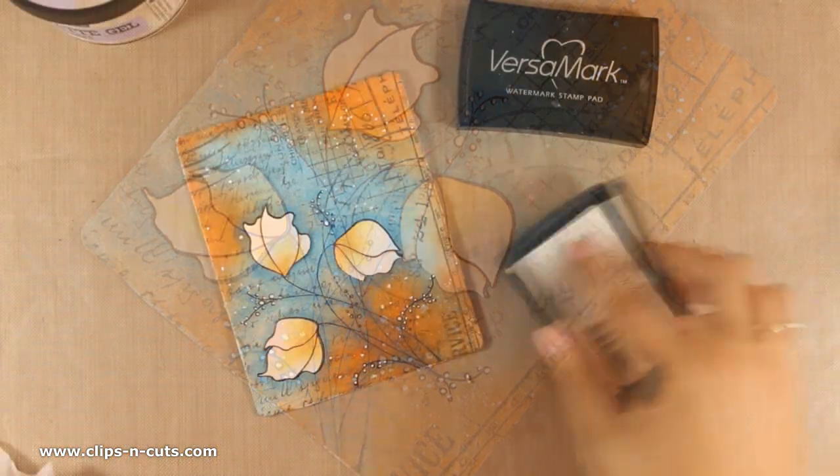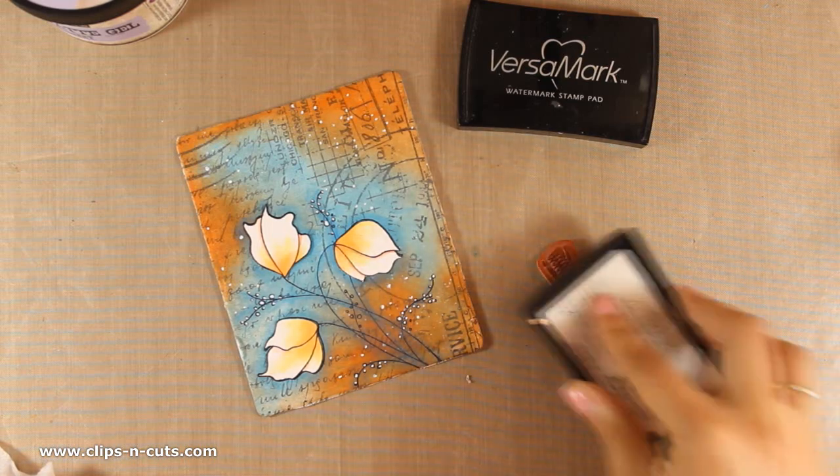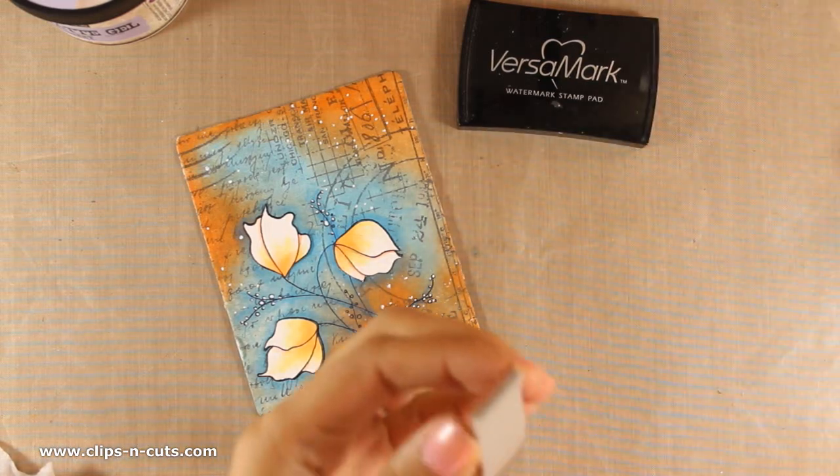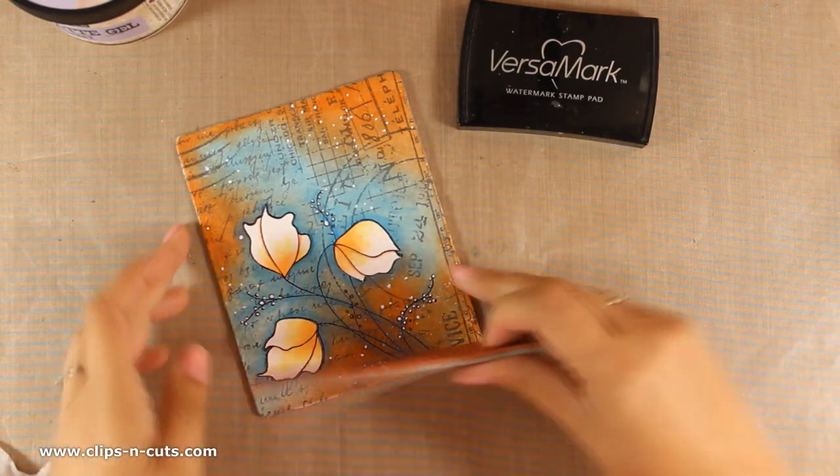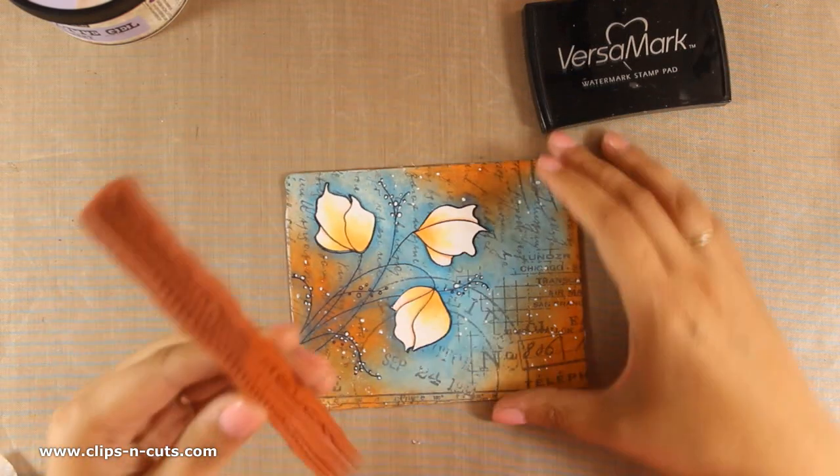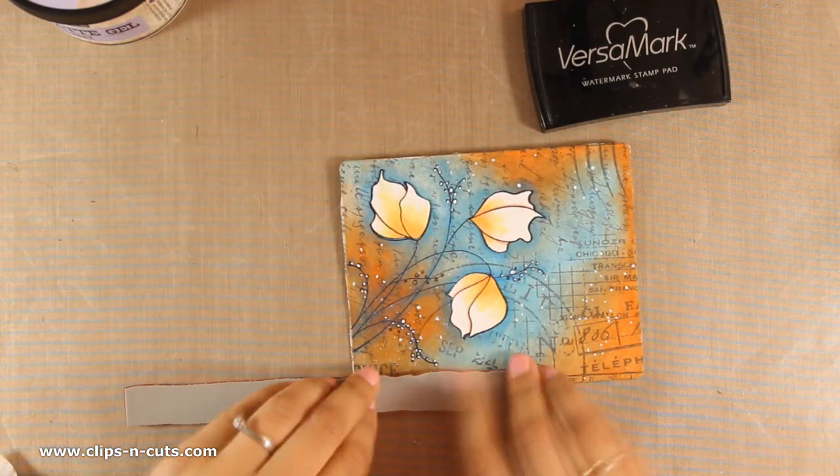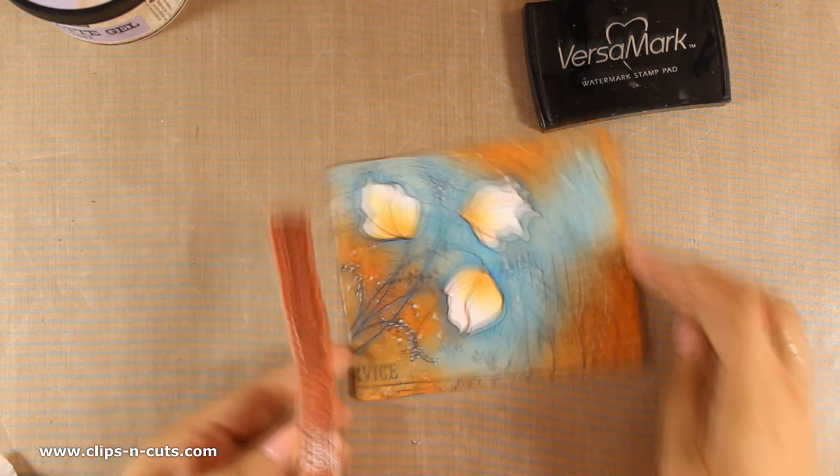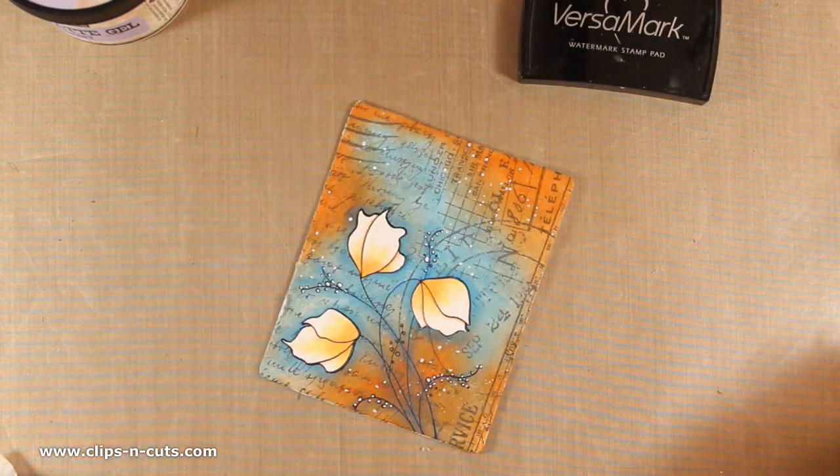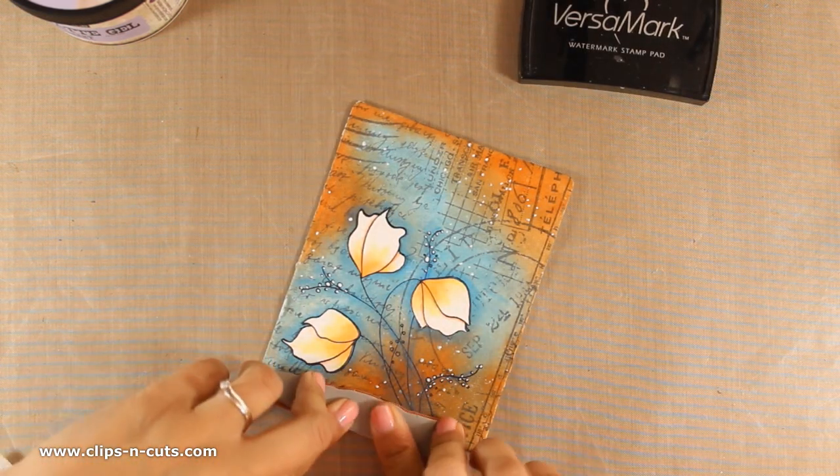Now I am going to do some embossing, so I am using my VersaMark along with this rugged edge stamp by Limor Weber Designs. This is a must-have stamp for all art journals and mixed media projects because it really adds a nice texture.